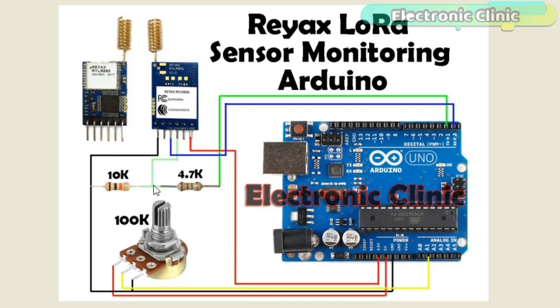A wire from the middle of these resistors is connected with the RXD pin of the module. The other leg of the 10K resistor is connected with the ground while the other leg of the 4.7K resistor is connected with the TX of the Arduino. The RX pin of the Arduino is connected with the TXD pin of the LoRa module.